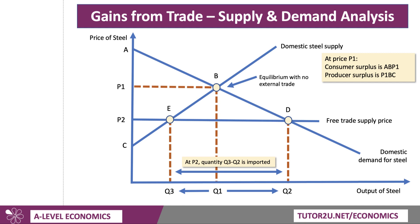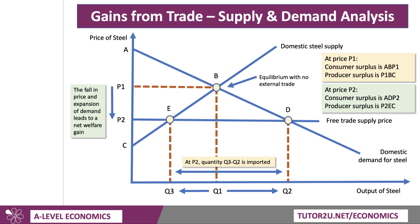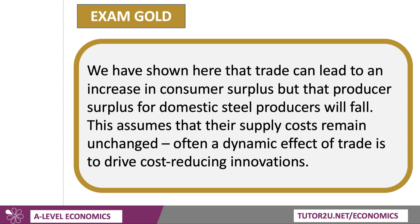I've labelled E and D there. At price P2, consumer surplus rises to ADP2. Producer surplus, though, falls to P2EC. The fall in the price and the expansion of demand has caused welfare to increase, but there's been a loss of producer surplus, more than outweighed by an increase in consumer surplus. Trade can lead to an increase in consumer surplus — a micro concept applied to macro — but the producer surplus for domestic steel manufacturers will go down.